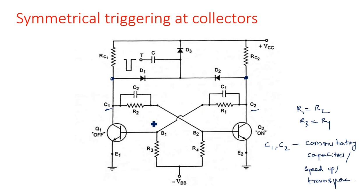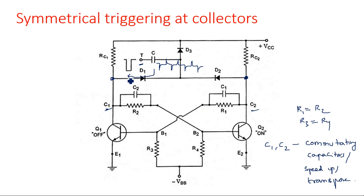When the circuit operates normally — say Q1 is in the off state and Q2 is in the on state — this stable condition persists until a triggering pulse is applied. A triggering circuit generator is applied through a capacitor and then given to the diode, which is connected in the reverse direction from the source. Both positive and negative peaks appear at the diode input, but the diode passes only the negative peaks, eliminating the positive peaks.